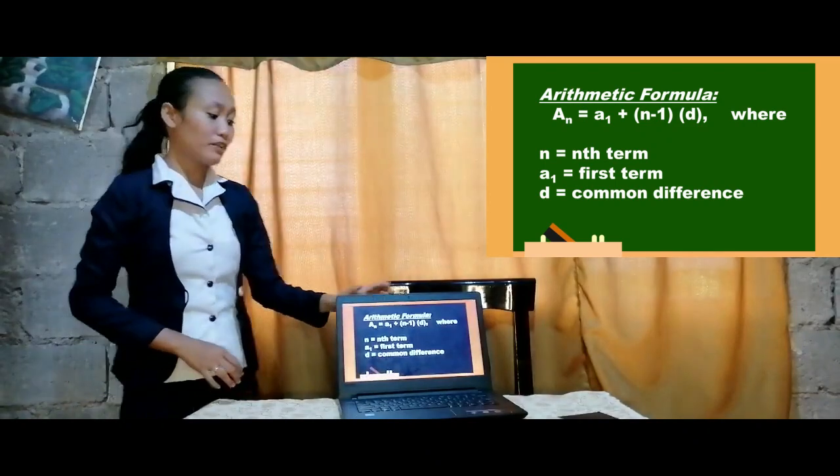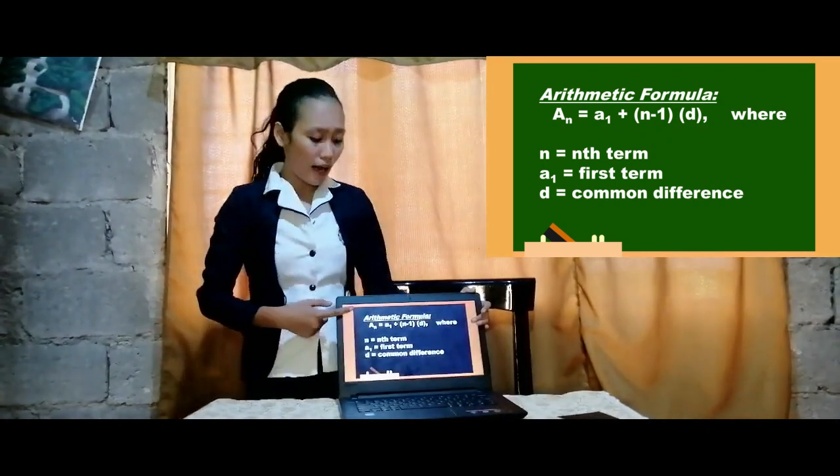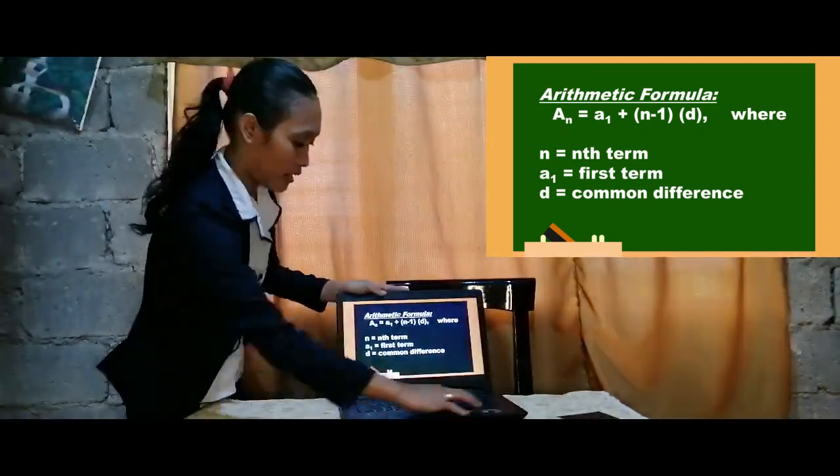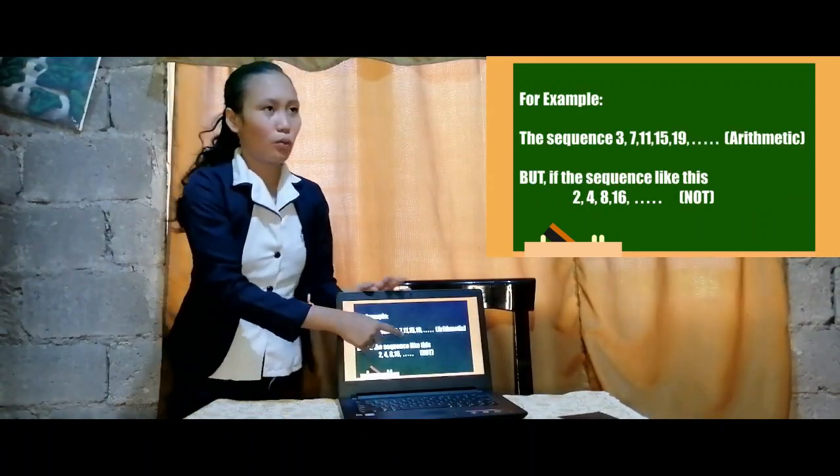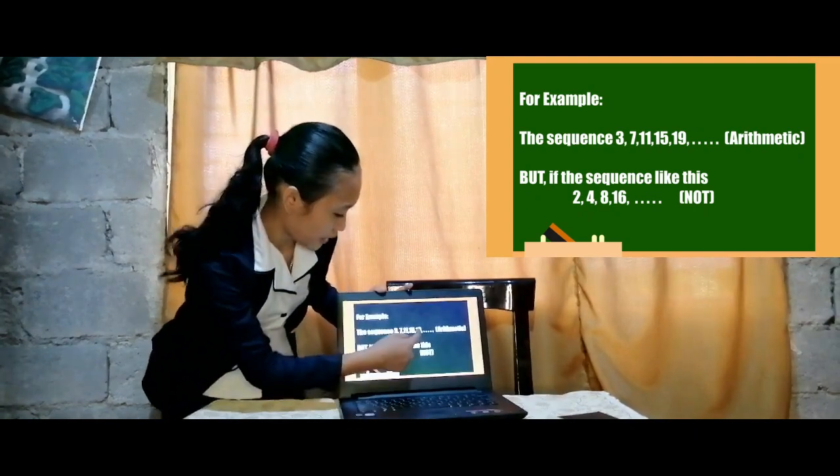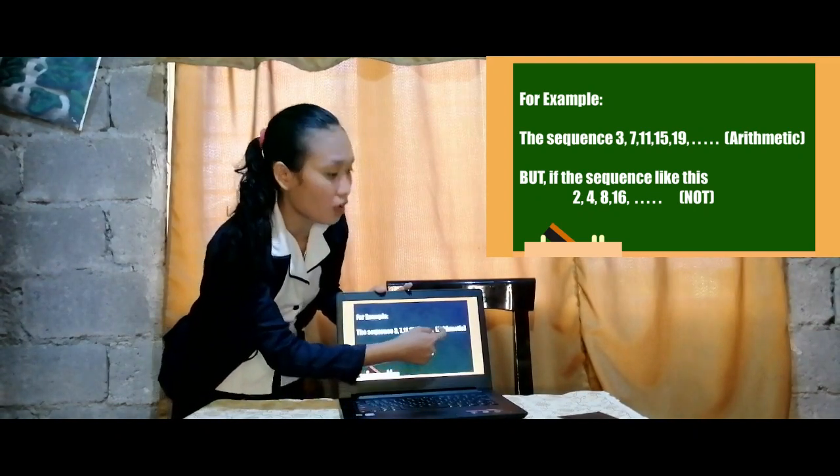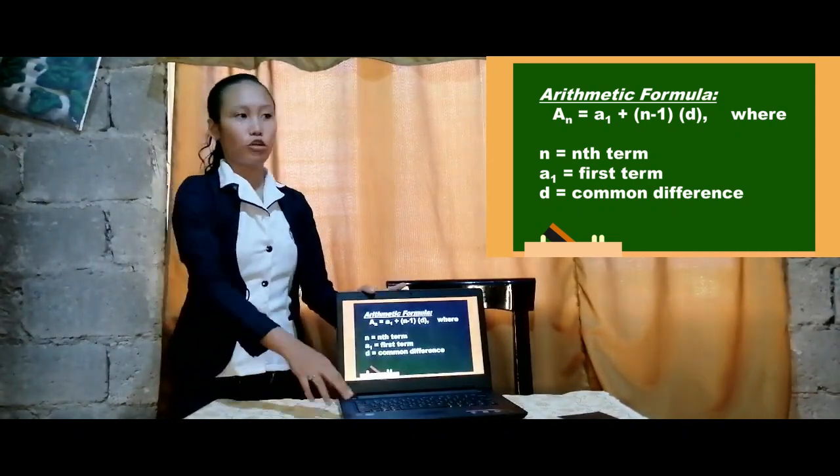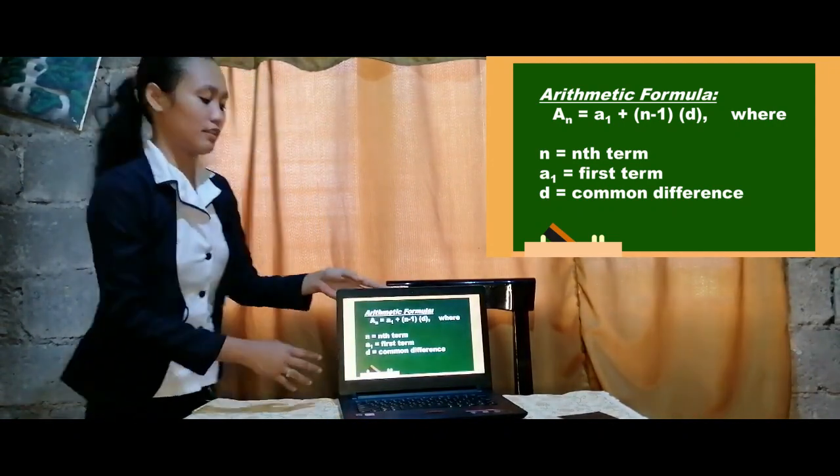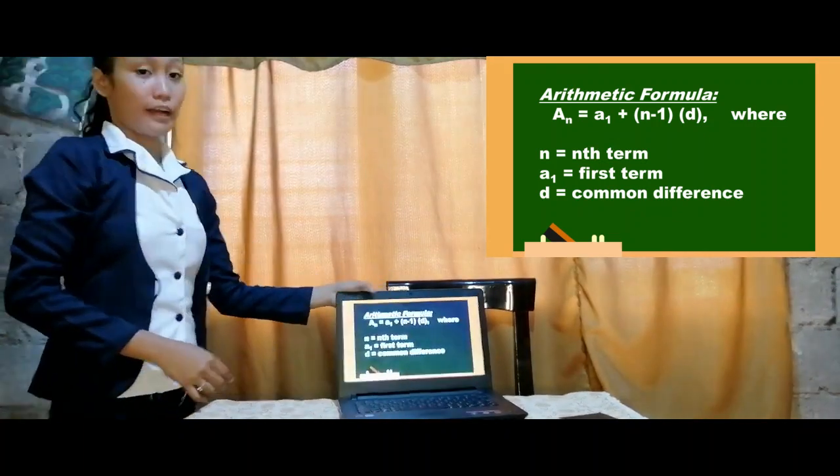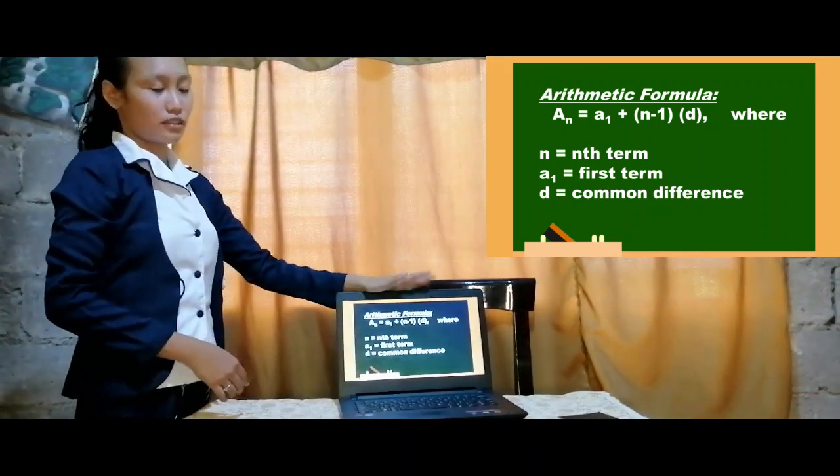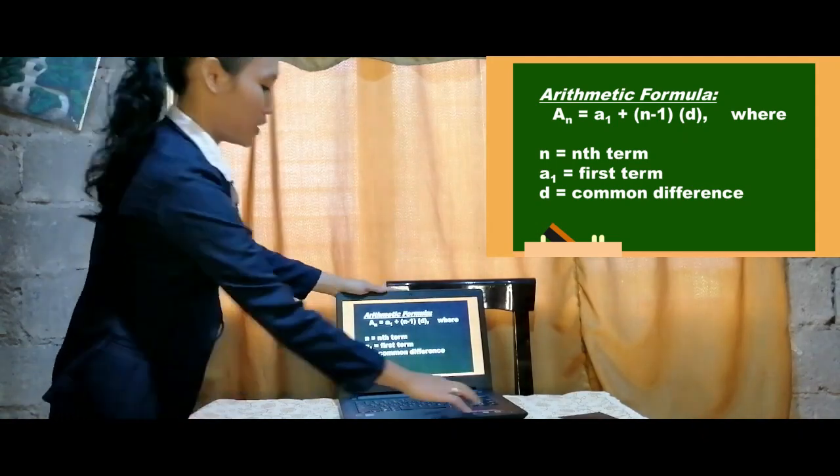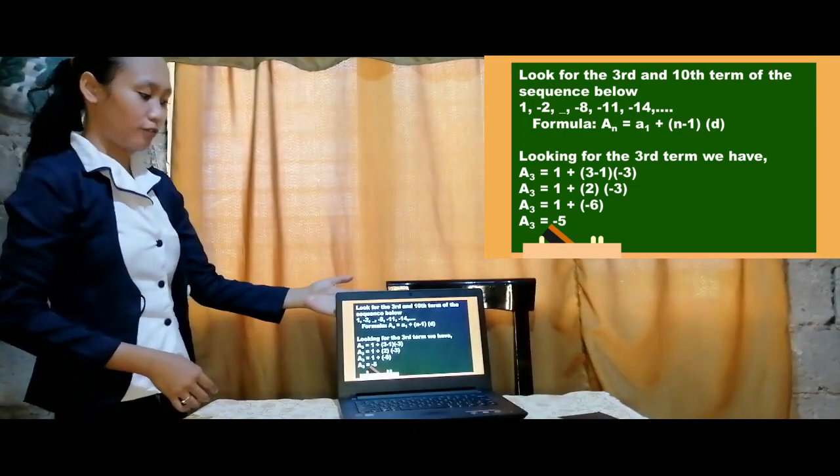Class, we have here an arithmetic formula. The arithmetic formula is so useful in finding the nth term because, for example, in this sequence, what if we will look for the 27th term? If we just write 19 plus 4, 23, and so on, it takes a lot of time. But if we will use this arithmetic formula, we can find the 27th term efficiently. We have here the formula: a sub n equals to a sub 1 plus the quantity of (n minus 1) times d. For a sub 1 is the first term, n is the nth term, and d is the common difference.